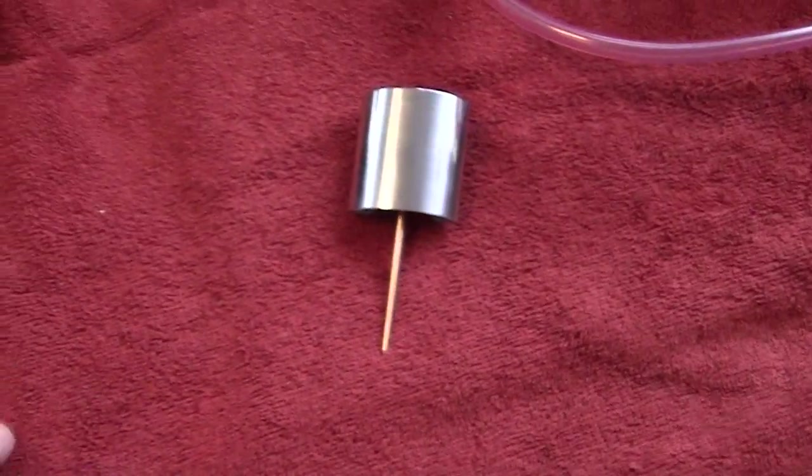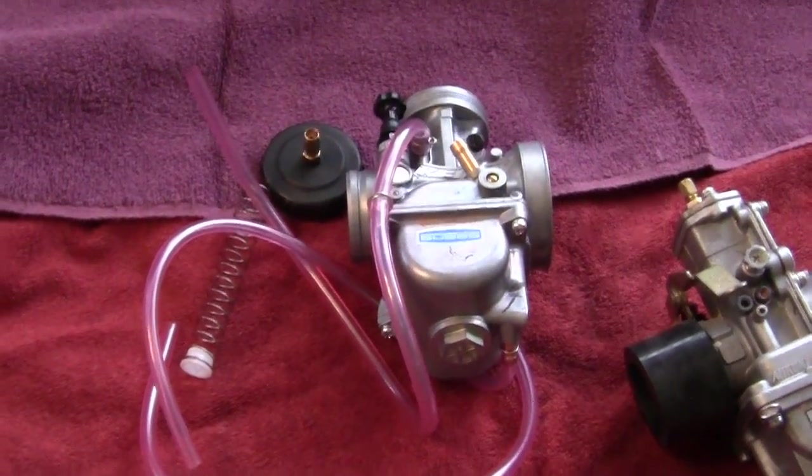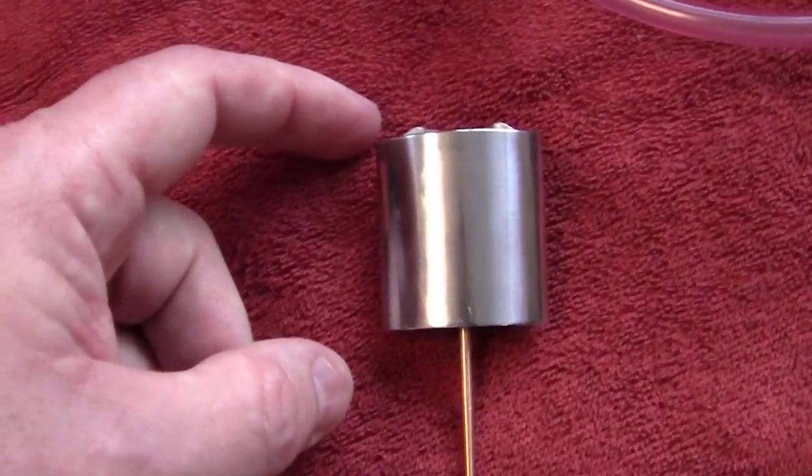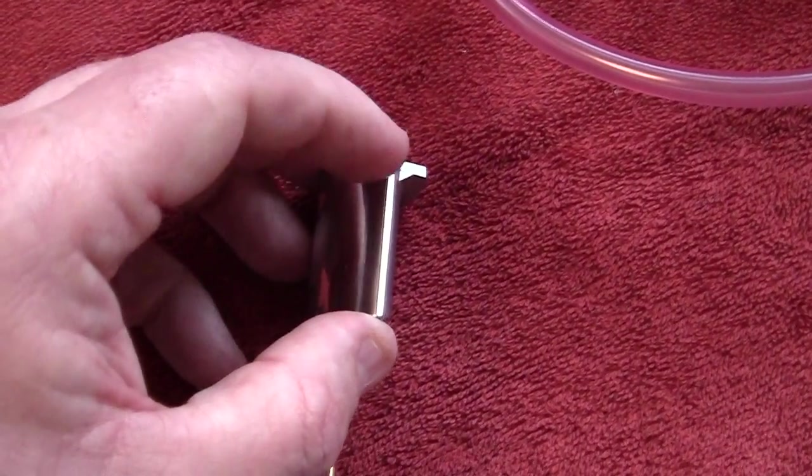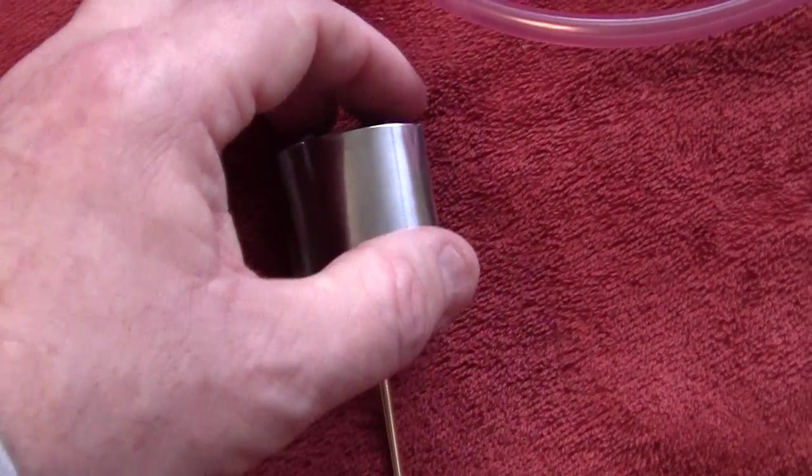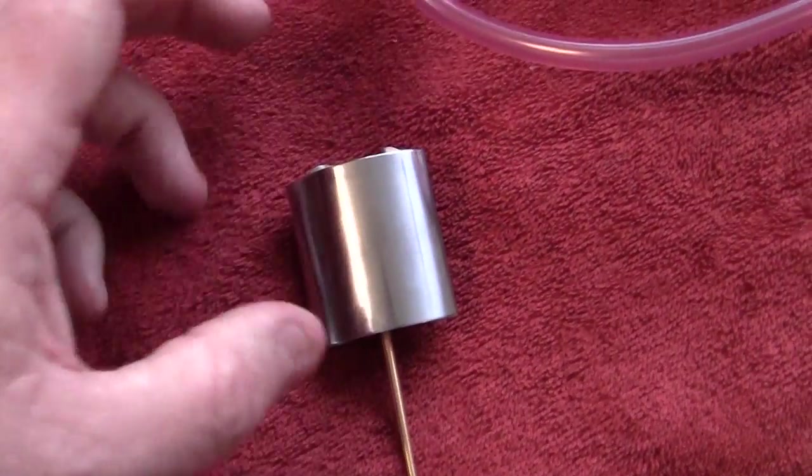After you use the carburetor for maybe a month or two, you can pull the slide out and you'll see where the chrome is worn through right here down to the brass. It doesn't hurt anything.